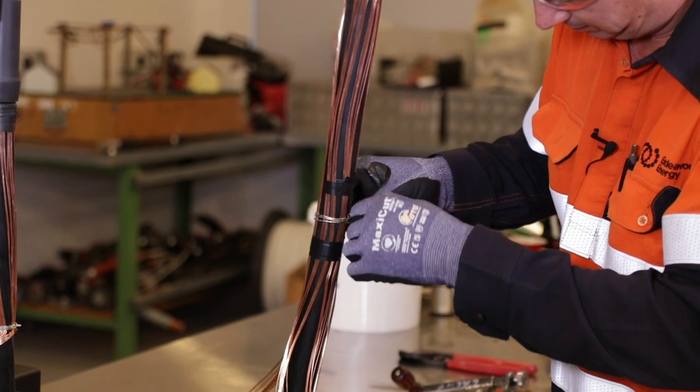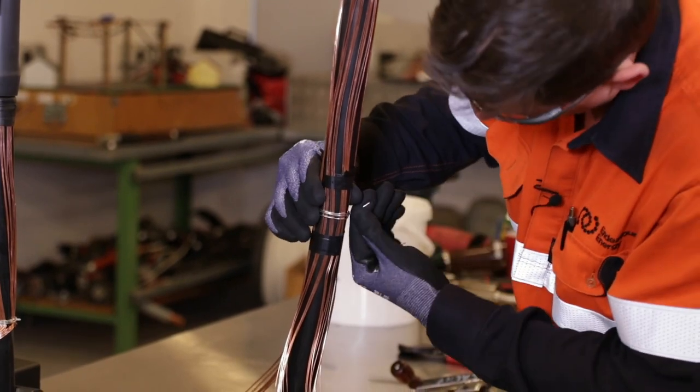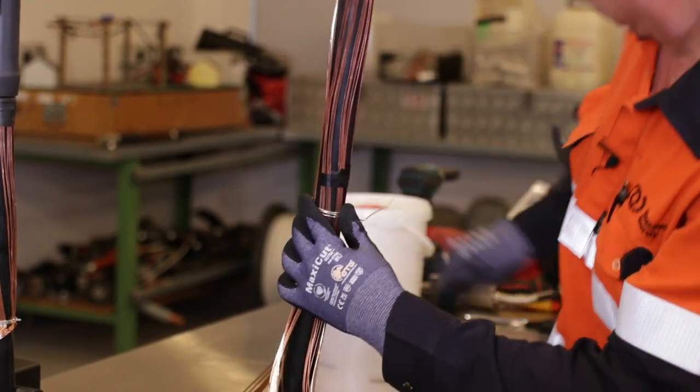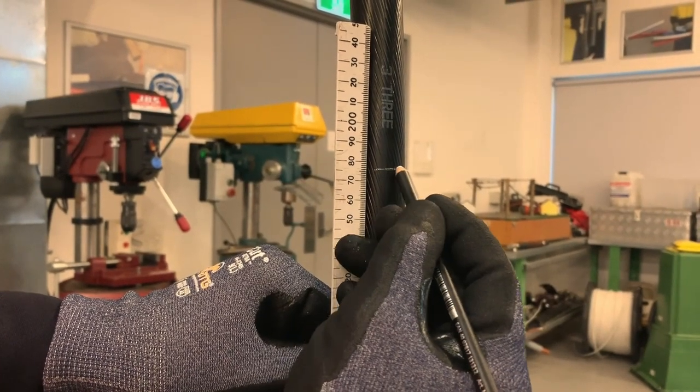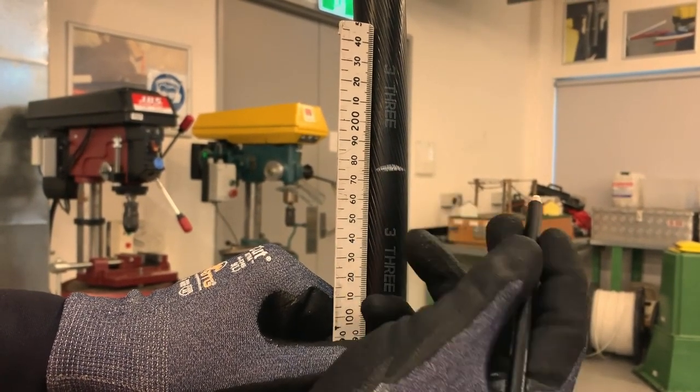So at that 250 mark, I'm just going to secure those screen wires with a binder. You're going to measure up now to 175 from the folded screen wires to cut the core.